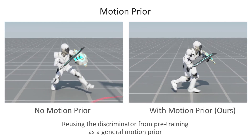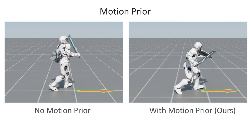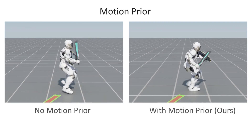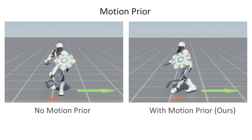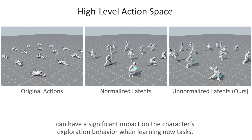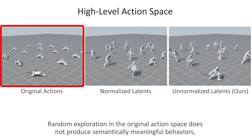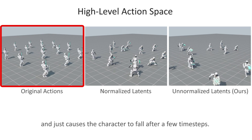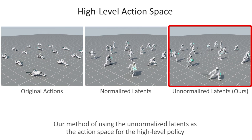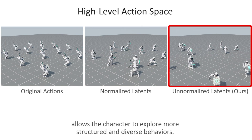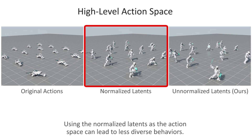Reusing the discriminator from pre-training as a general motion prior when training on new tasks can produce higher quality motions. The choice of action space for the high-level policy can have a significant impact on the character's exploration behavior when learning new tasks. Random exploration in the original action space does not produce semantically meaningful behaviors and just causes the character to fall after a few time steps. Our method of using the un-normalized latents as the action space for the high-level policy allows the character to explore more structured and diverse behaviors, whereas using normalized latents can lead to less diverse behaviors.